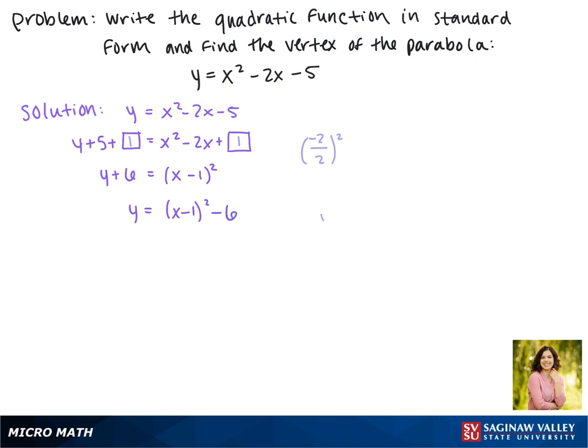Now remember this form is y equals x minus h squared plus k, where the vertex is h, k. So when we find the vertex of this equation, we have to do the opposite of h, so that makes it a positive 1 and then a negative 6. So our vertex is at 1, negative 6.